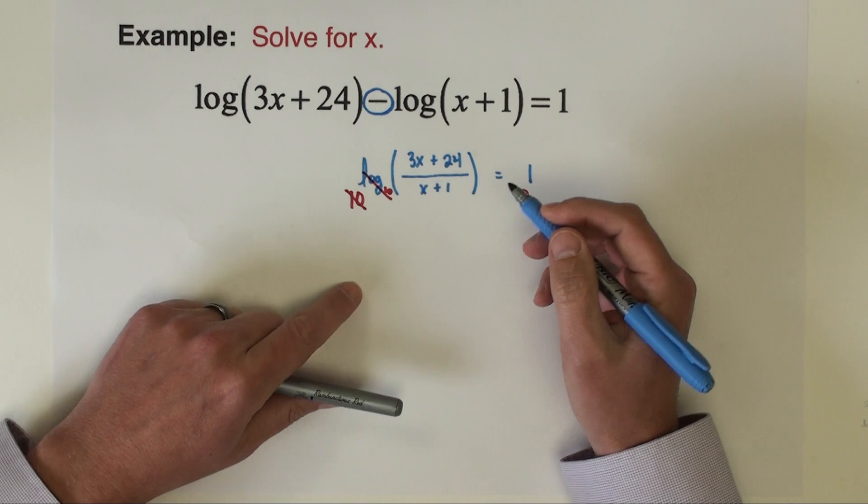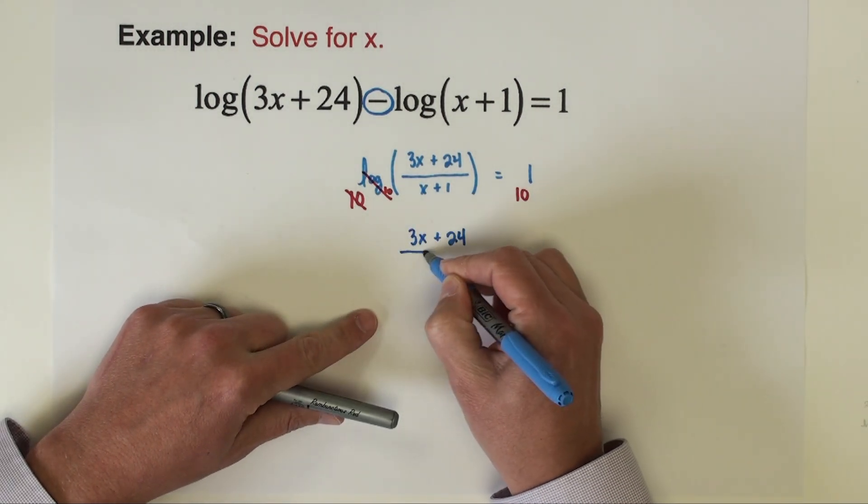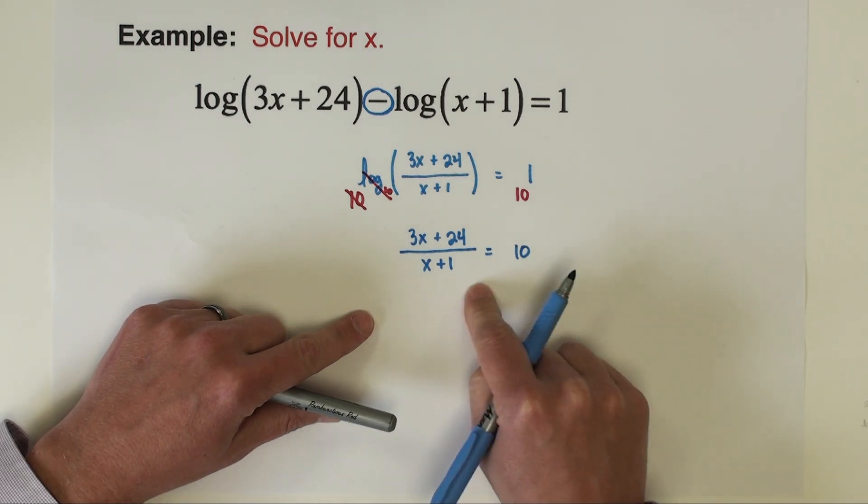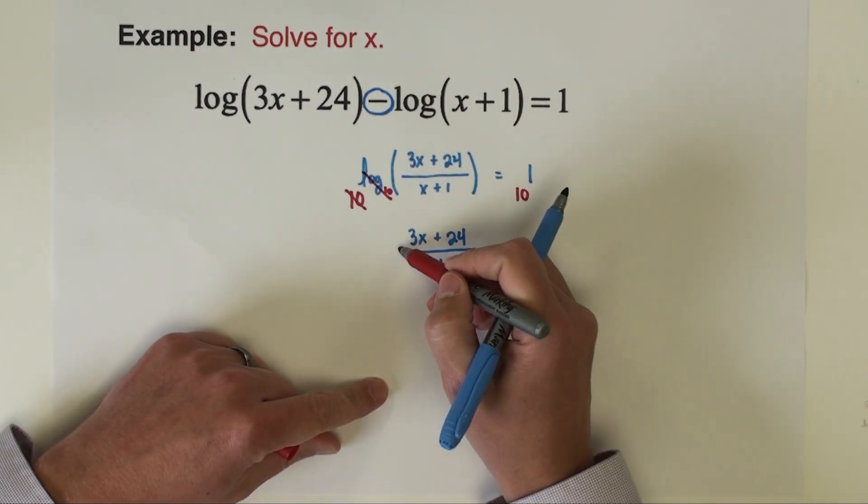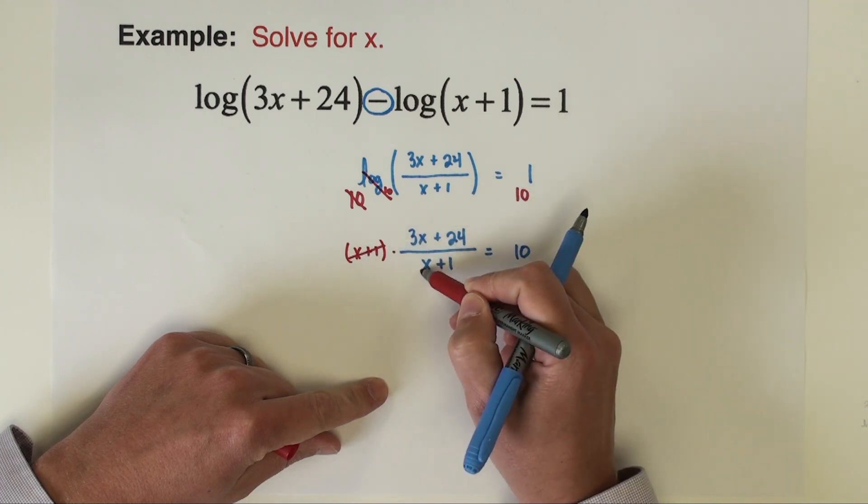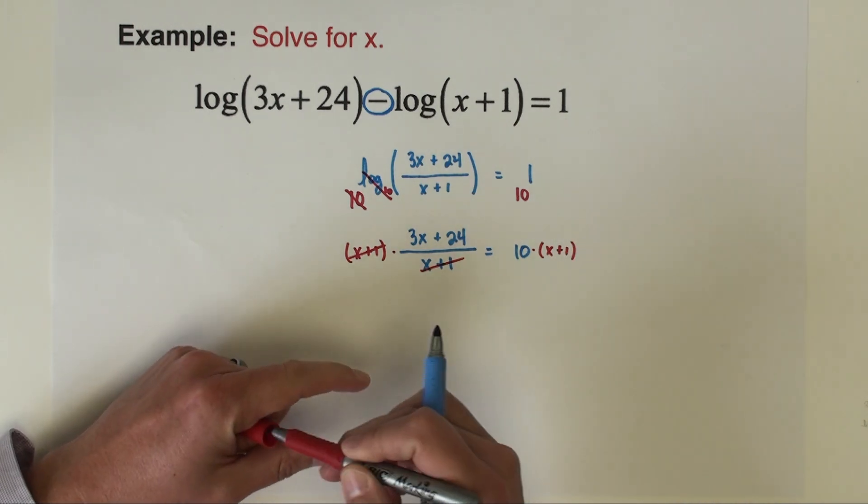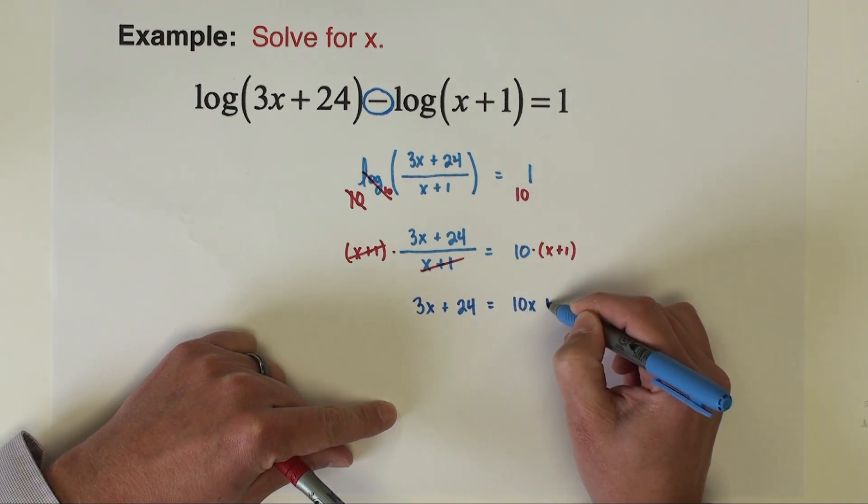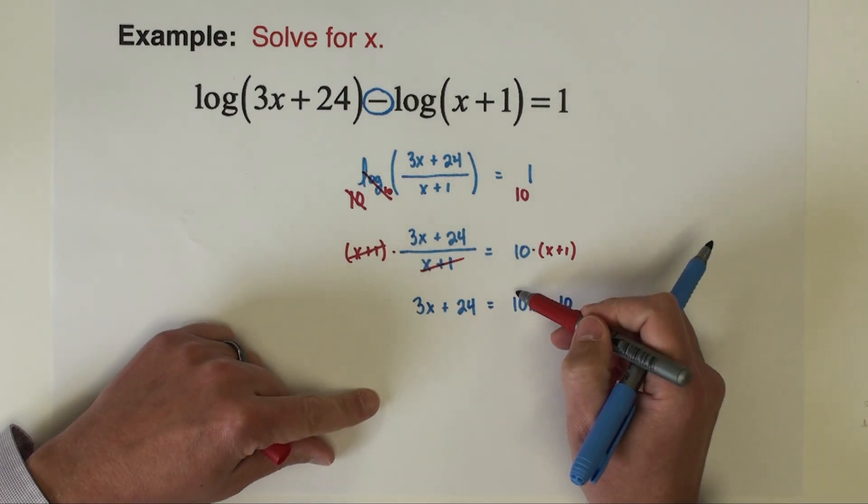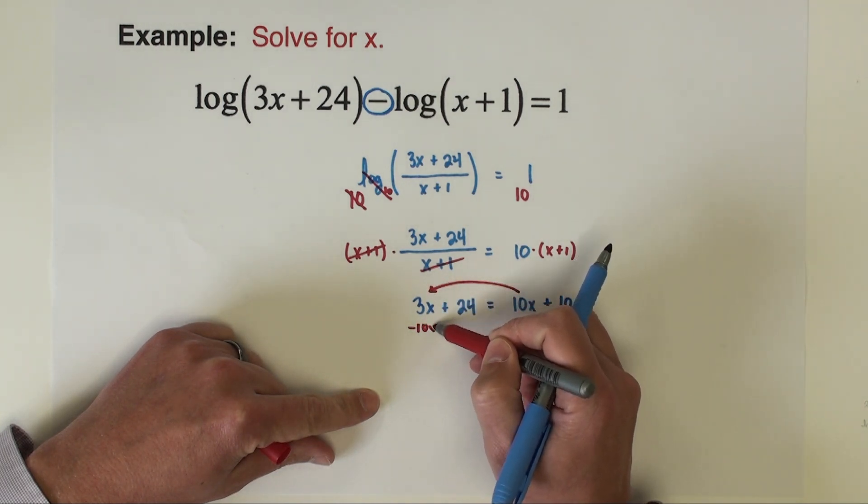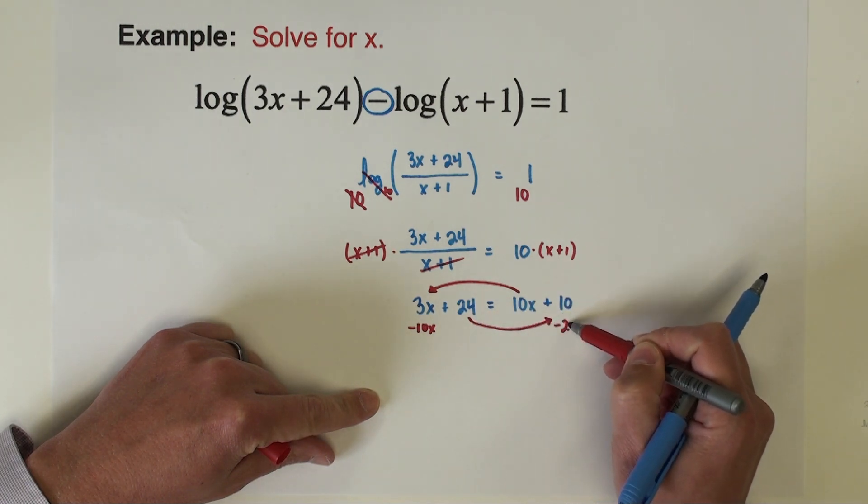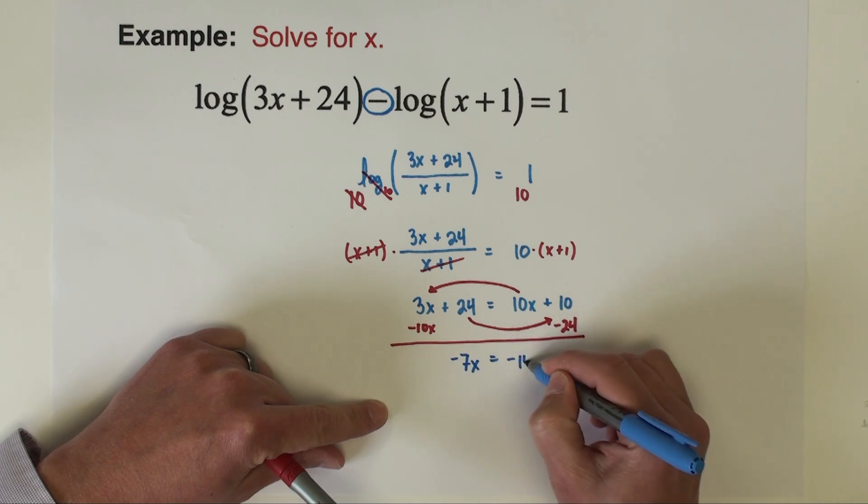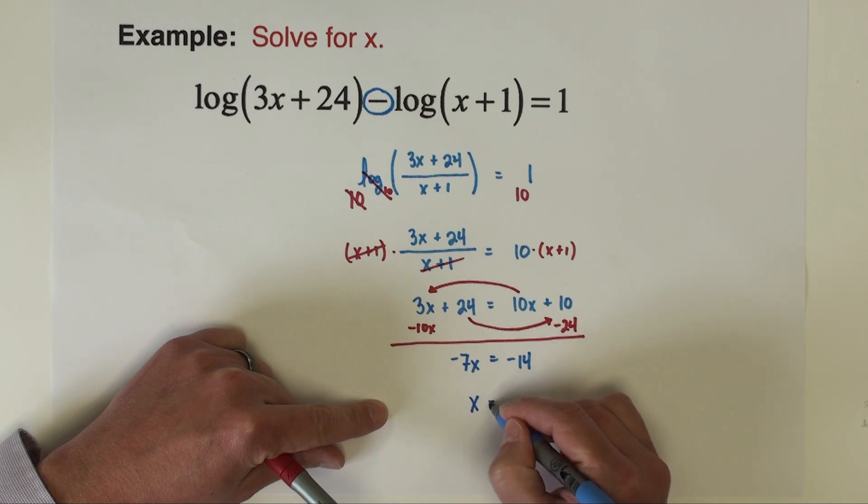That results in 3x plus 24 over x plus 1 equals 10 to the first power, which is 10. We now have a rational equation. What I would do is begin by multiplying the denominator x plus 1 to the opposite side. That gives us 3x plus 24 equals—distribute the 10—10x plus 10. Next we'll move our like terms. This 10x subtracts over to this side, and the plus 24 subtracts to that side. That results in negative 7x equals negative 14. If we divide both sides by negative 7, we get x equals 2.